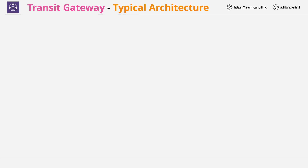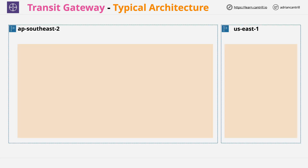Some of this should be a refresher, but let's go ahead and do it anyway. On screen now, I'm going to show you a pretty typical Transit Gateway architecture. First, we have two regions — AP Southeast on the left and US East on the right. Inside the AP Southeast 2 region, we create a Transit Gateway, which isn't initially attached to anything — it's a gateway object within the AP Southeast 2 region.